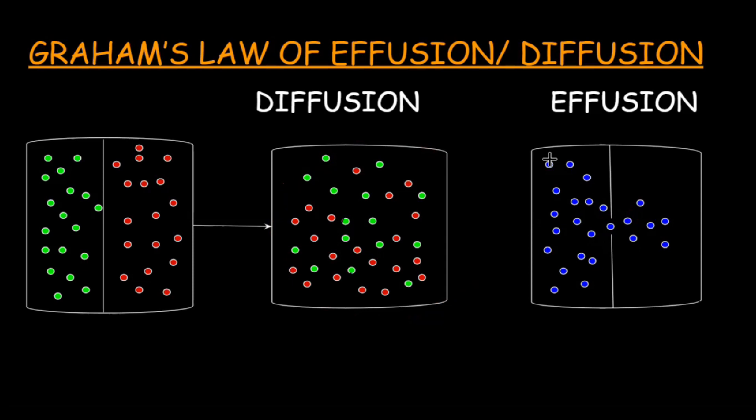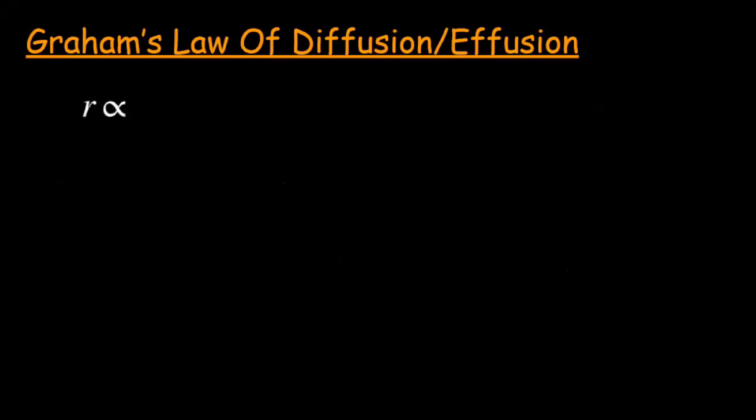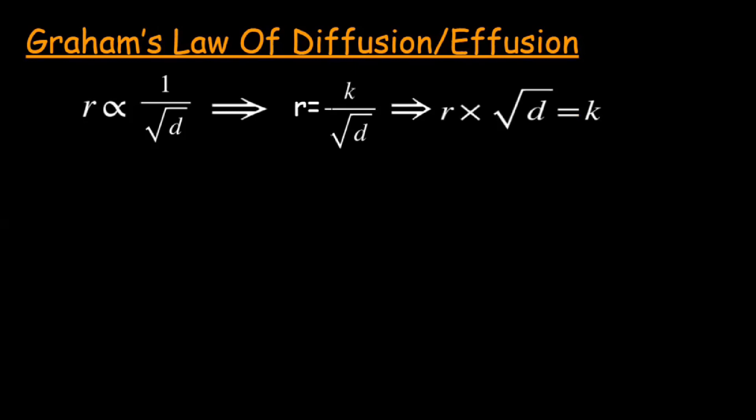According to Graham's law, rate is inversely proportional to the square root of density. Higher the gas density, lower will be its rate of diffusion. To eliminate the proportionality sign, we use a constant k, so rate equals k multiplied by one over the square root of d. The value of k can be found by multiplying the rate of diffusion or effusion with the square root of density. This is Graham's equation, which can be used for different gases to relate their rates of diffusion and effusion.